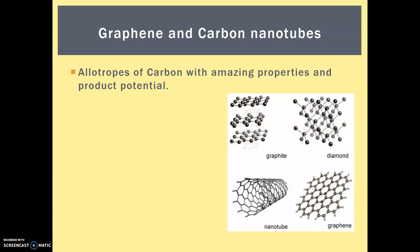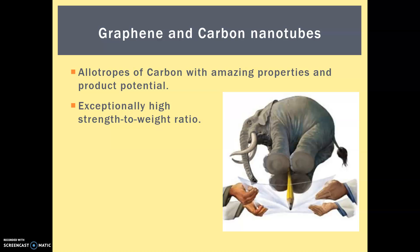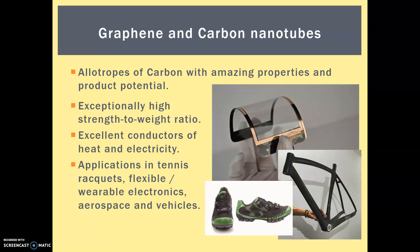We've learned about graphene, but we're also classifying carbon nanotubes here as well. Both of these are allotropes of carbon with amazing properties and product potential. By allotrope, we mean — as you can see in the picture — graphite and diamond, one of the softest and one of the hardest materials known to man. Those are naturally occurring, while carbon nanotubes and graphene are man-made allotropes of carbon. Nanotubes and graphene have exceptionally high strength-to-weight ratios — they say if you had a sheet of graphene, you could suspend an elephant on the tip of a pencil. They are also excellent conductors of heat and electricity, meaning they have huge applications for things like tennis rackets, flexible and wearable electronics, and aerospace and vehicles.